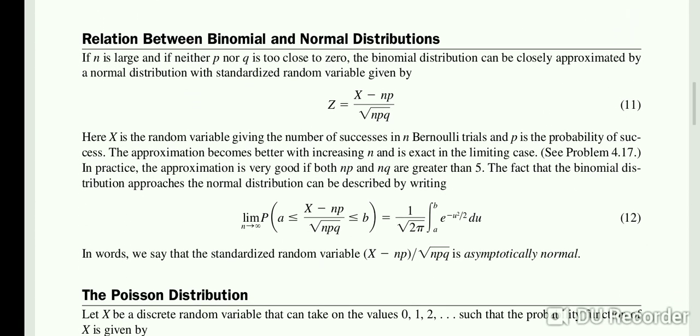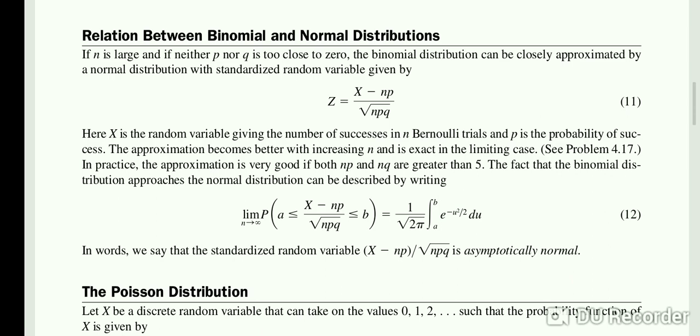Now, the relationship between binomial and normal distribution: z equals (X minus np) over square root npq. If n is large and if neither p nor q is too close to 0, the binomial distribution can be closely approximated by a normal distribution with standardized random variable given by that expression.